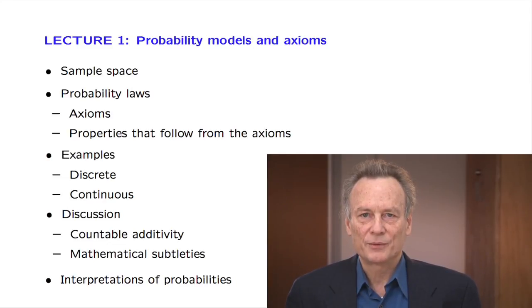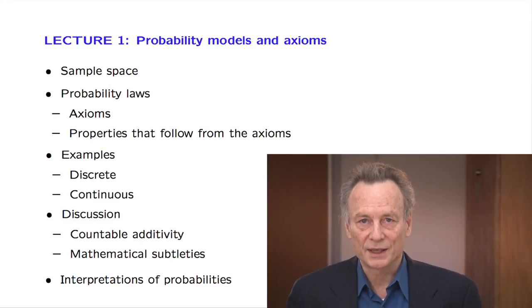We will then go through a couple of very simple examples involving models with either discrete or continuous outcomes. As you will be seeing many times in this class, discrete models are conceptually much easier. Continuous models involve some more sophisticated concepts, and we will point out some of the subtle issues that arise.